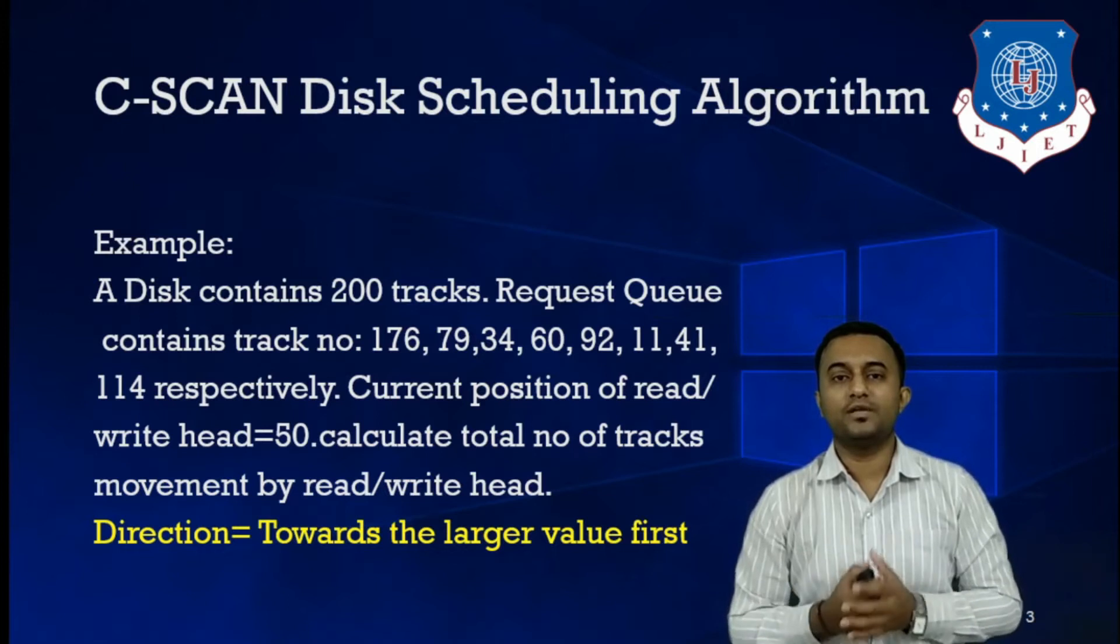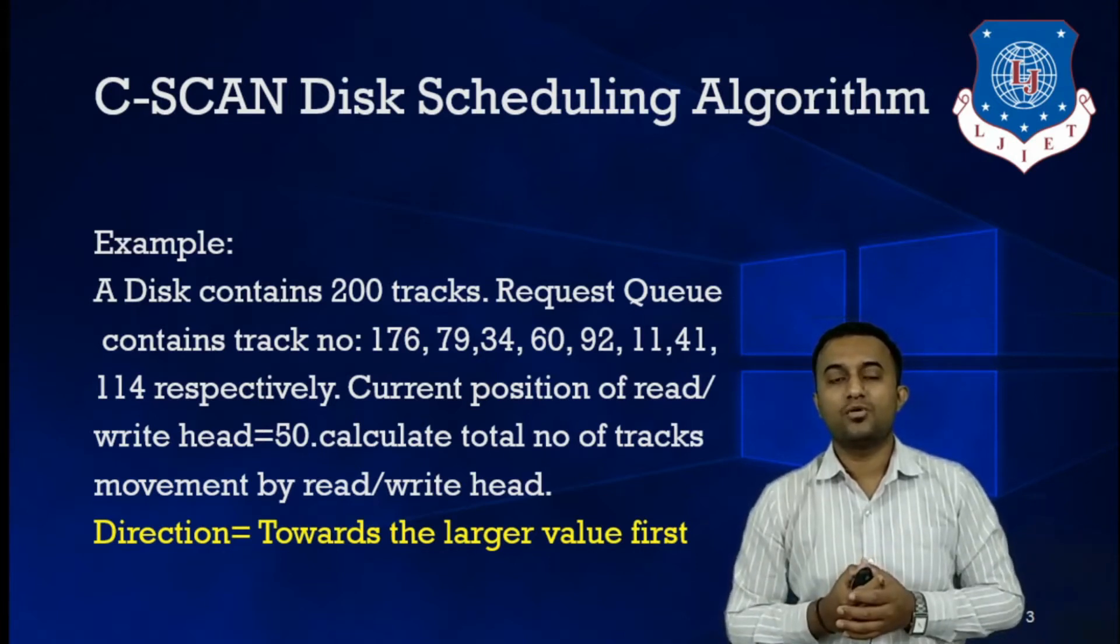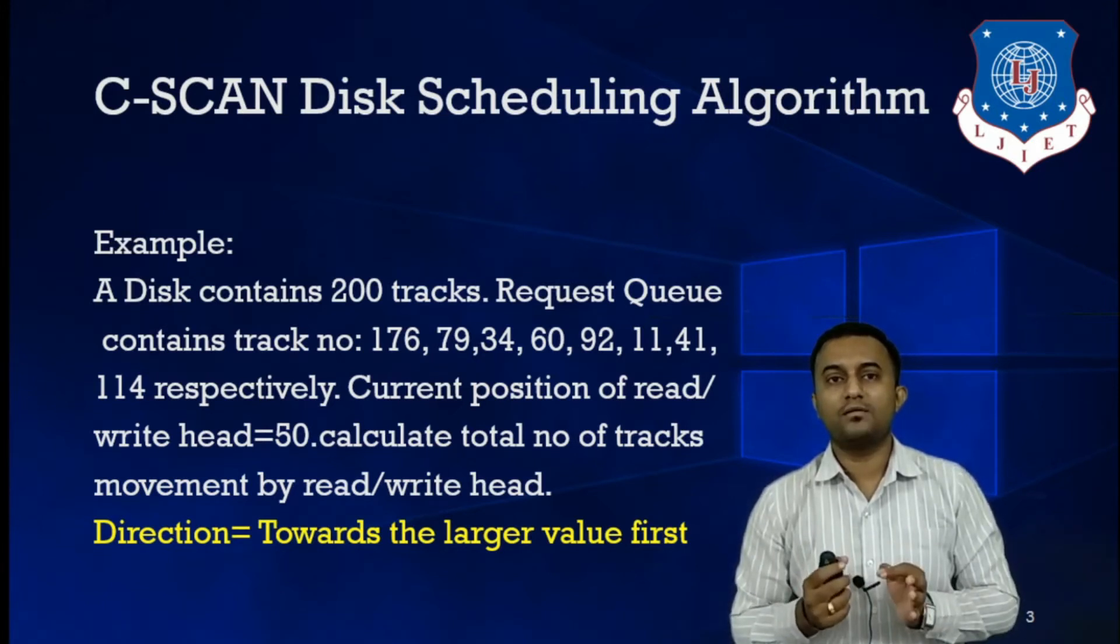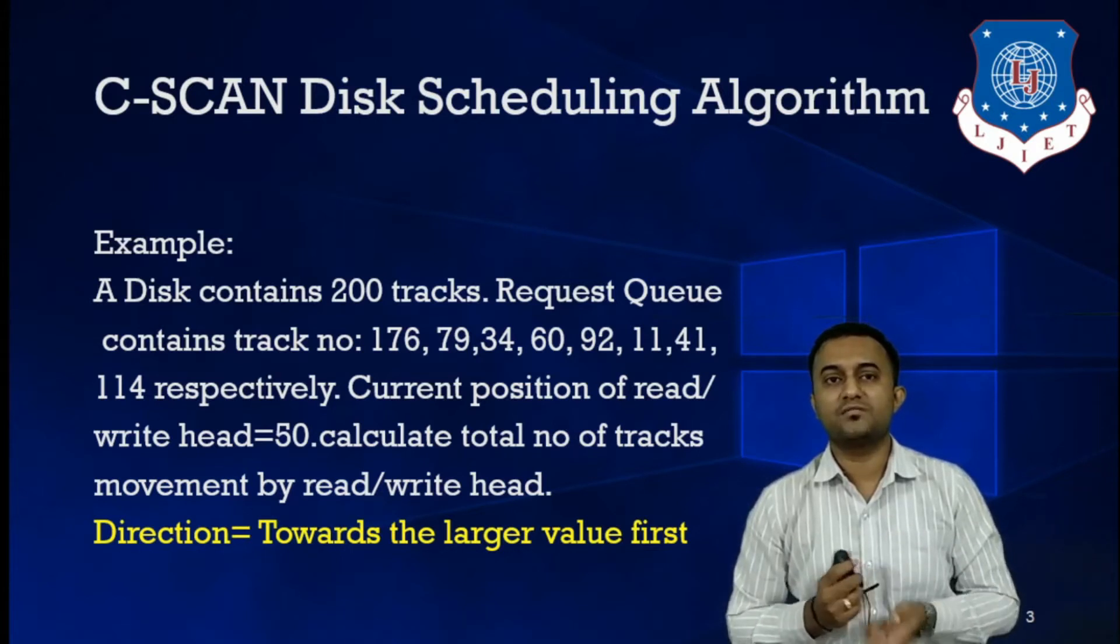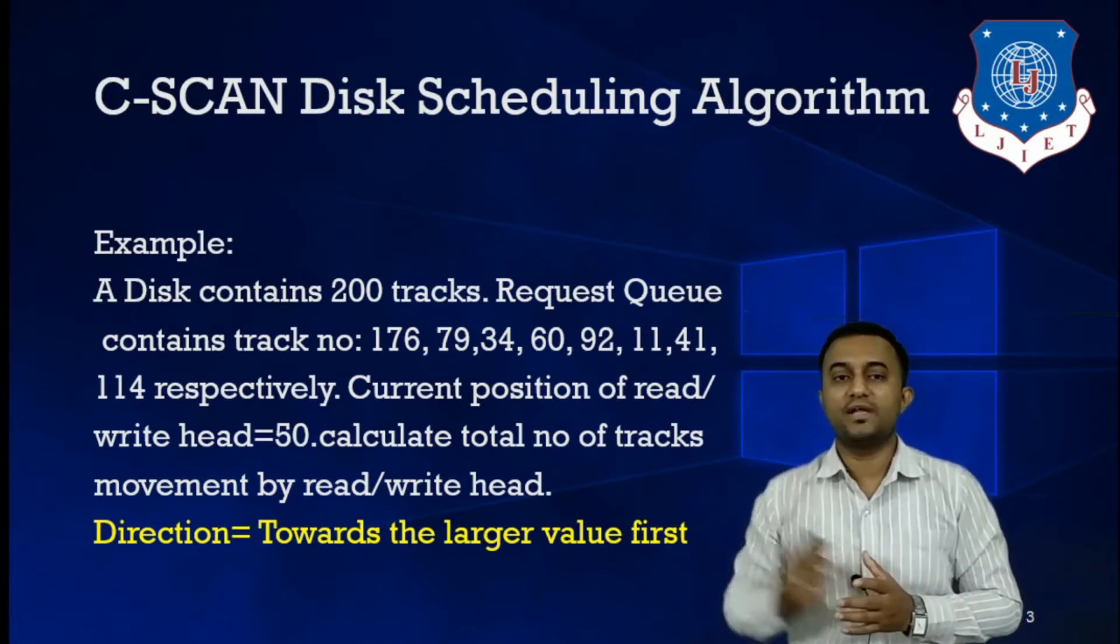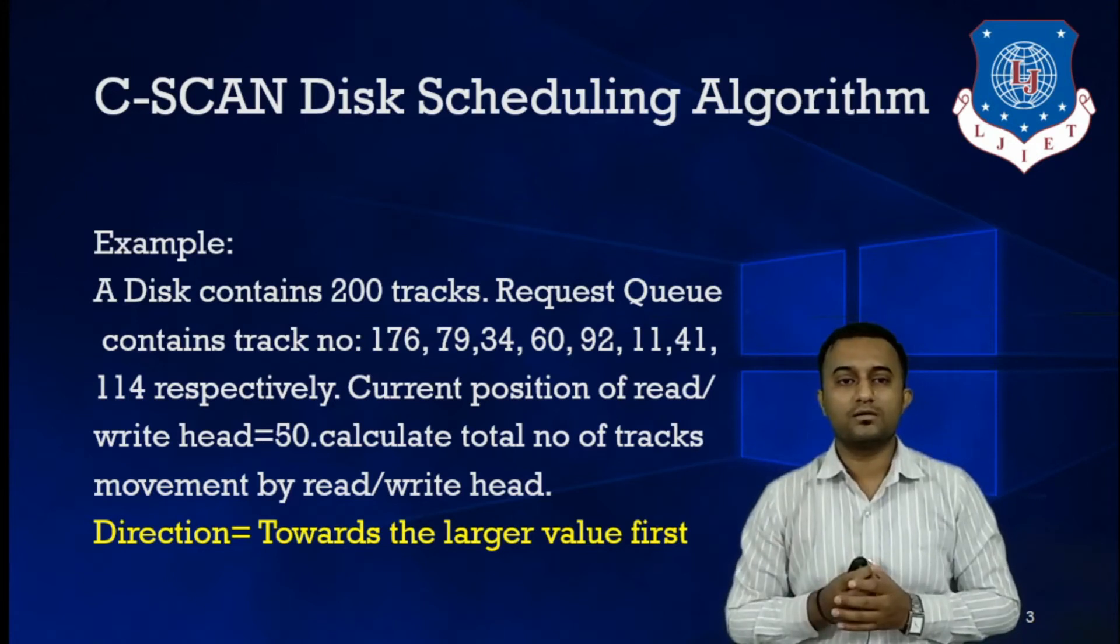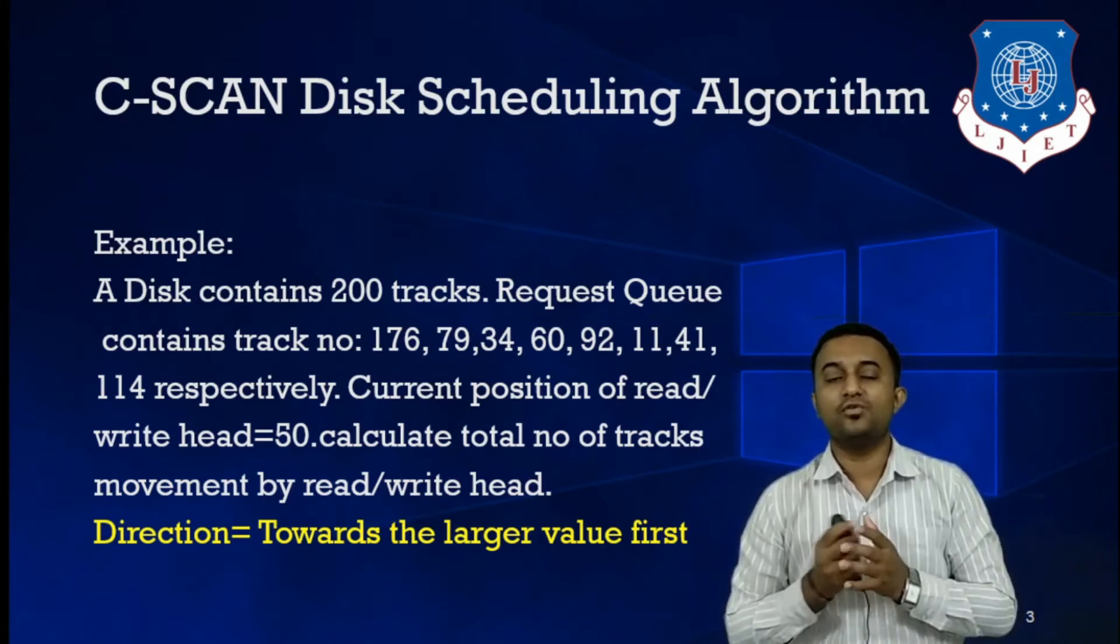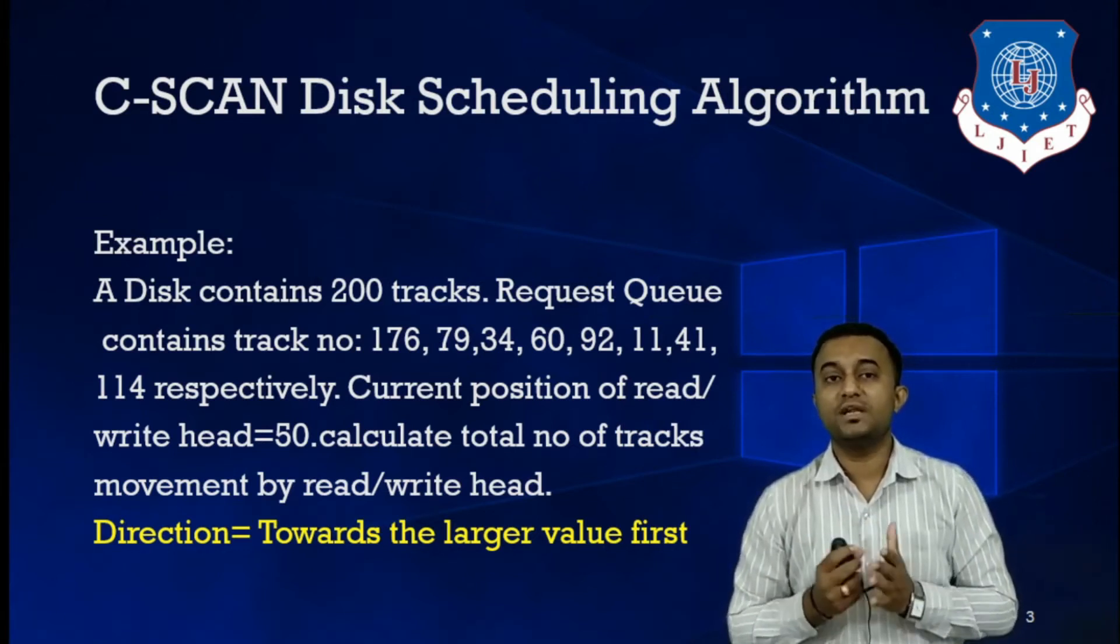We have to take the number of tracks moved by the read head. In this case also, because we have discussed already in SCAN, one extra input needs to be given in your examination, which is the direction. Direction needs to be given as an input. I have added the direction parameter. Direction in this case you have to consider towards the larger value first.